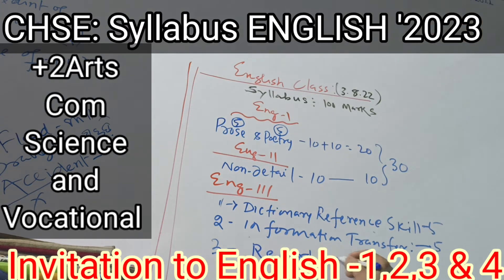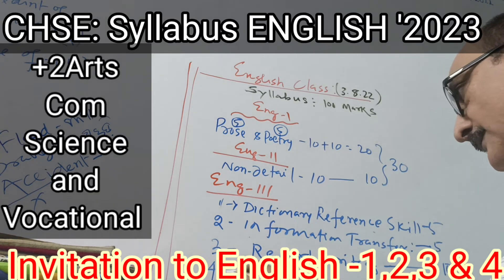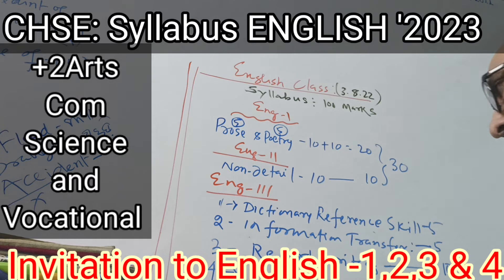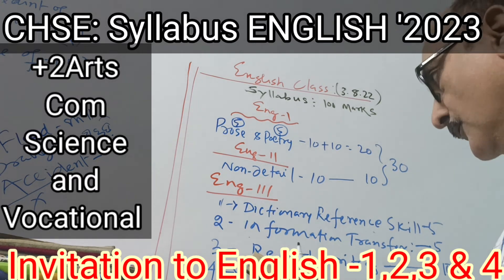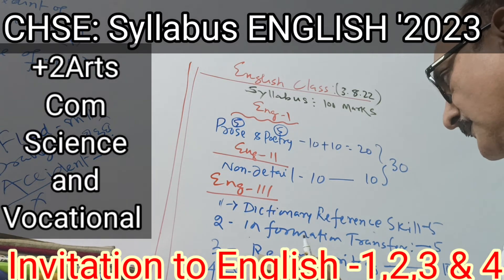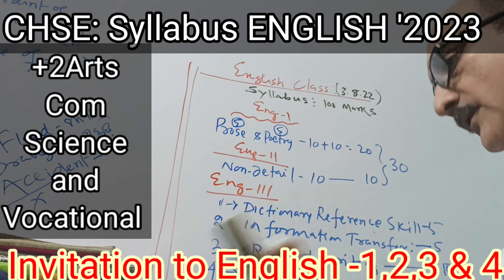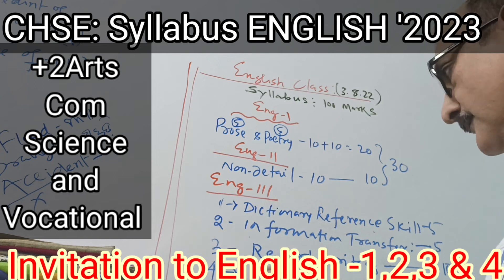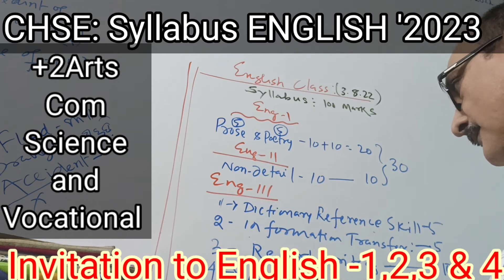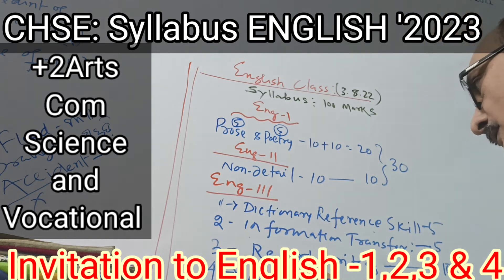Dictionary reference skill — 5 marks. Notes making and summarizing.